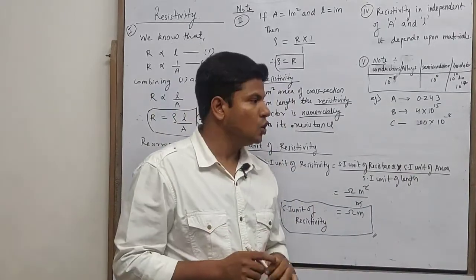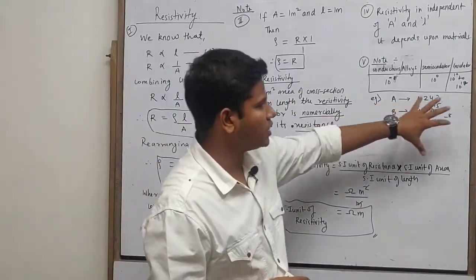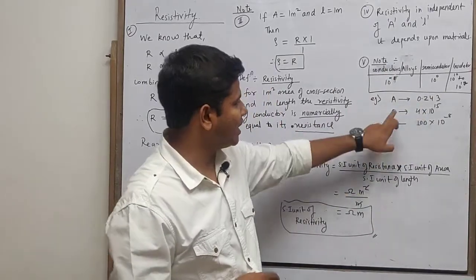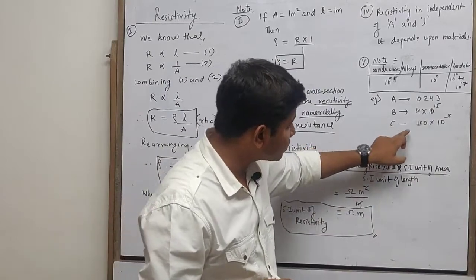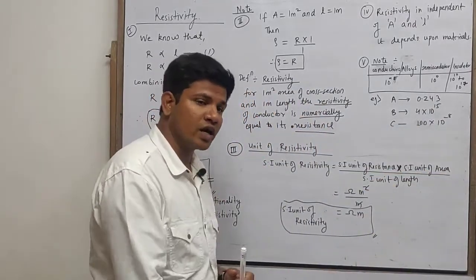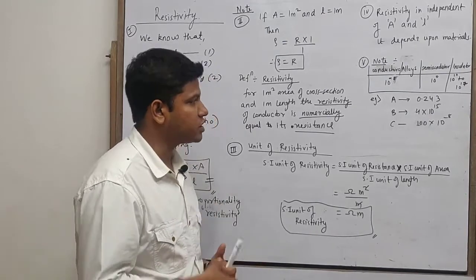So the question is that material A has a value of resistivity, material B has a value of resistivity, and material C has a value of resistivity. So let's know which is insulator, which is conductor, which is semiconductor.